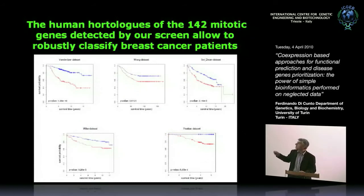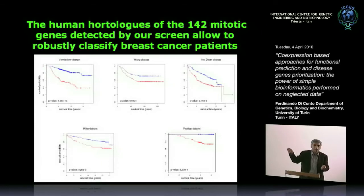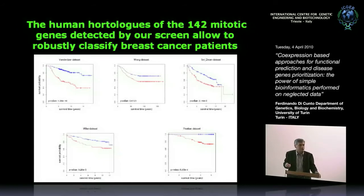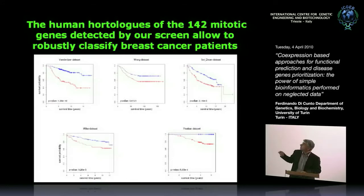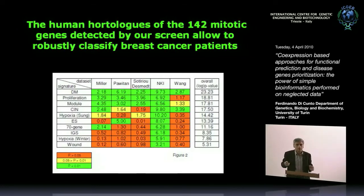As an aside: we asked whether these 142 Drosophila mitotic genes could be used as a predictor for survival in cancer. It turned out that the orthologs of Drosophila mitotic genes identified by co-expression are one of the best and most robust predictors of cancer outcome — completely unbiased and not derived directly from tumor samples. This predictor works reliably and robustly on very different datasets, though specifically in breast cancer.